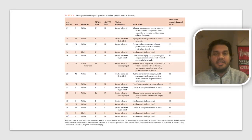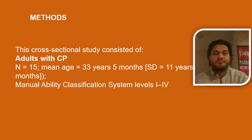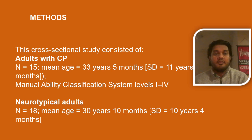In this study, we worked with adults with cerebral palsy from both a unilateral and bilateral clinical presentation and across a wide range of function using the MACS scale. This cross-sectional study consisted of adults with cerebral palsy with a mean age of 33 years and 5 months across MACS levels 1 through 4, as well as neurotypical adults with a mean age of 30 years and 10 months.